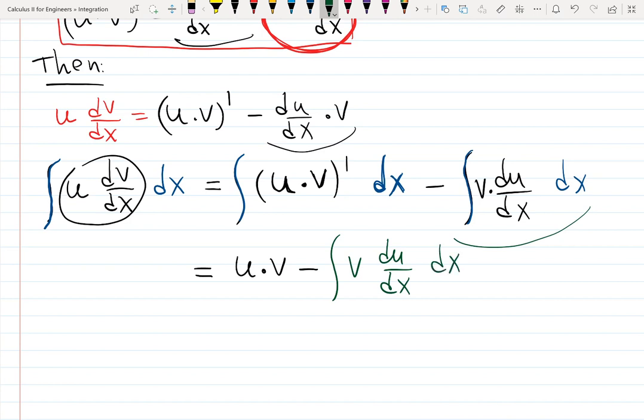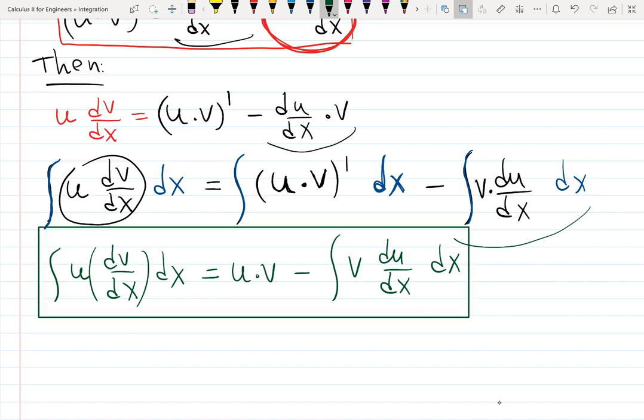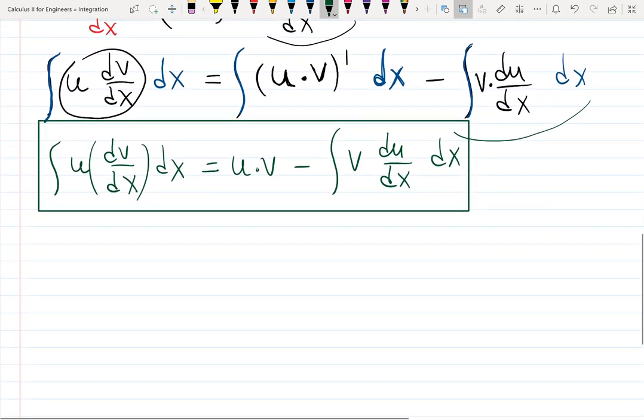Then the formula works: integral of u dv/dx dx equals u times v minus integral of v du/dx dx. That's exactly the formula for integration by parts.